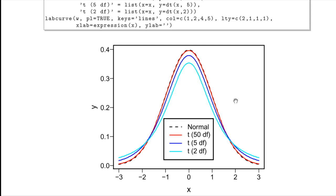The normal distribution is the most peaked distribution. As the t-distribution has fewer and fewer degrees of freedom, all the way down to 2 with the light blue curve, it's less peaked and has much heavier tails. That reflects the instability of estimating what's in the denominator — the standard deviation. If you knew the population standard deviation, you would use a z-statistic instead of a t-statistic.